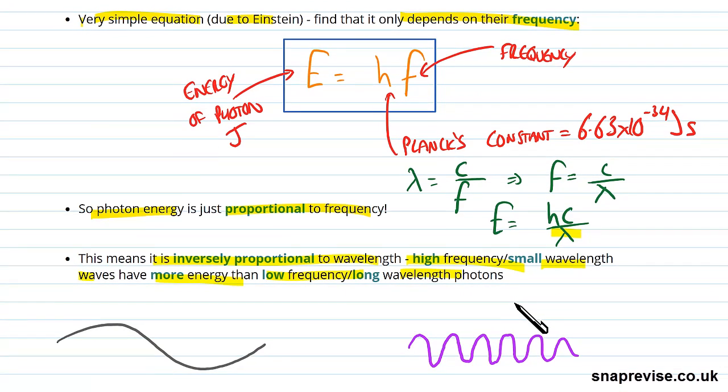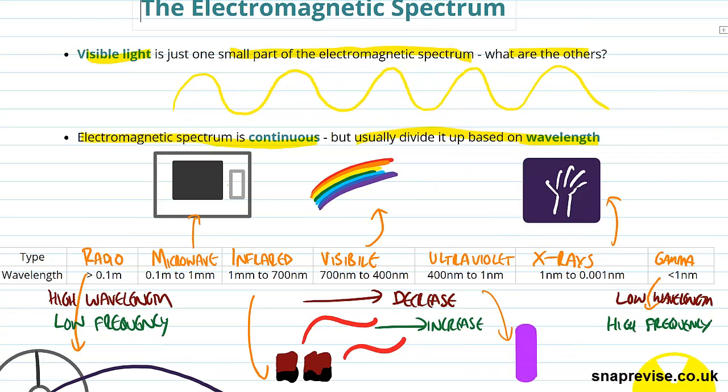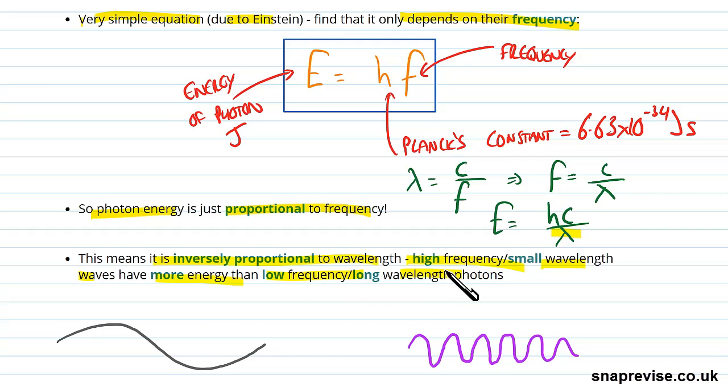So what do we mean by that? Well, we just mean that if we go back to this table here, our radio waves, if you remember, have a very long wavelength. But a very long wavelength, remember, means that they have a very low energy because high frequency have more energy than low frequency.